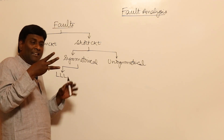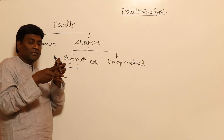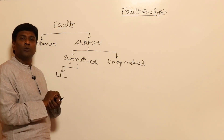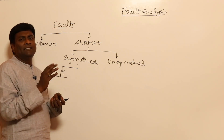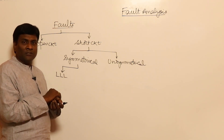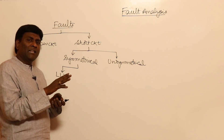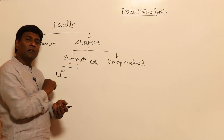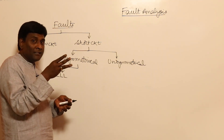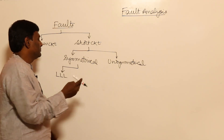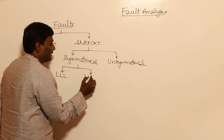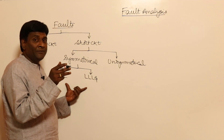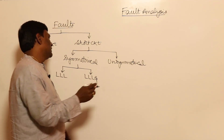In symmetrical faults, examples include the triple-L fault where all three lines are short-circuited. Although DC offset will be different immediately after the fault, except for DC offset all three phases experience the same conditions. Another type is the L-L-L-G fault where all three lines are short-circuited with the ground. Both are symmetrical because all three phases experience the same conditions.